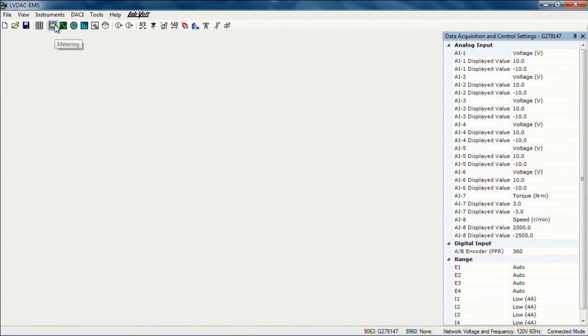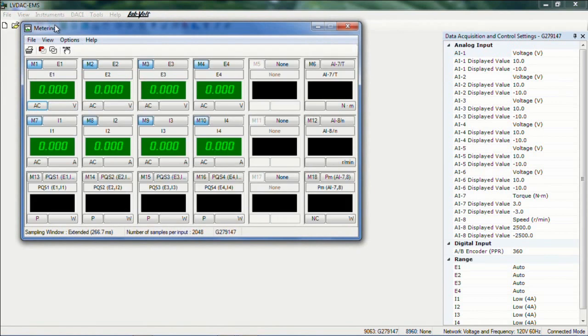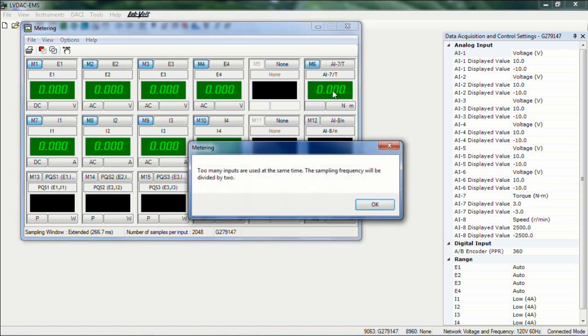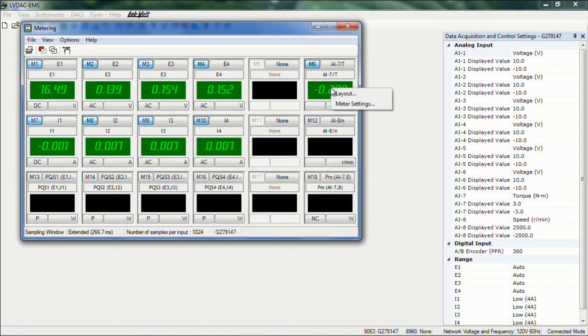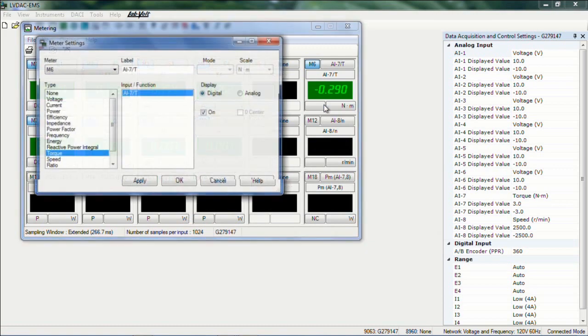So I click OK. And now I can look at my actual measurements into the metering for example. So here I would need to click on the continuous refresh to see the actual values. If I start my system I can see the actual voltages and current. I should be set to DC though. And I can also see the speed that I would need to set to the encoder A and B in that case.